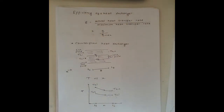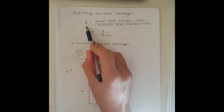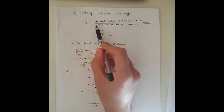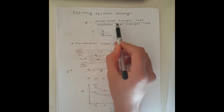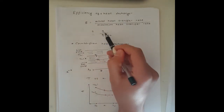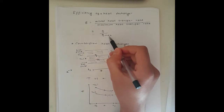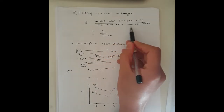In this video I'm going to talk about something that is usually unexplained in heat transfer classes — the efficiency of a heat exchanger. Efficiency is denoted by epsilon and is defined as the ratio of actual heat transfer rate to the maximum heat transfer rate, where Q is the actual heat transfer rate and Q_max is the maximum heat transfer rate.